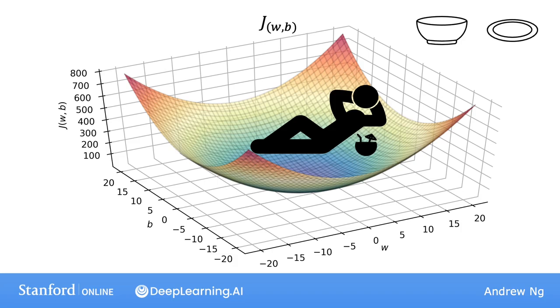What you see here is a 3D surface plot where the axes are labeled w and b. So, as you vary w and b, which are the two parameters of the model, you get different values for the cost function j of w and b.